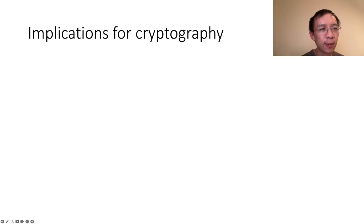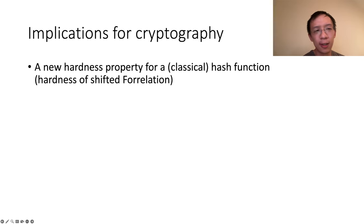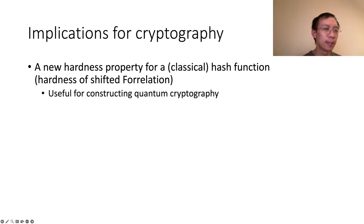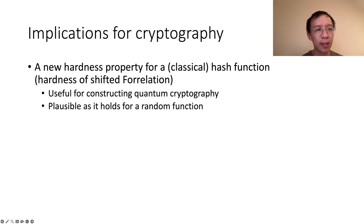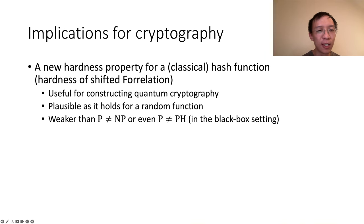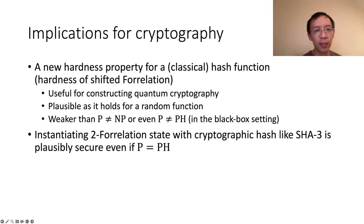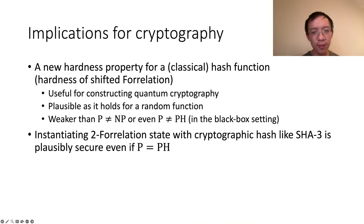I want to reserve the remaining time for discussing implications. We introduced a new hardness property for a classical hash function — hardness of shifted forrelation — that satisfies three conditions. First, it is useful for constructing quantum cryptography like commitments. Second, it is plausible, because a random function satisfies this hardness property. Third, this property seems to be even weaker than P not equal NP or even P not equal PH, and we prove this is the case in the black-box setting. Finally, using the standard random oracle heuristic to instantiate our two-forrelation state with a cryptographic hash like SHA-3, such a PRS construction will be plausibly secure even if someone discovers a proof that P equals NP or P equals PH.